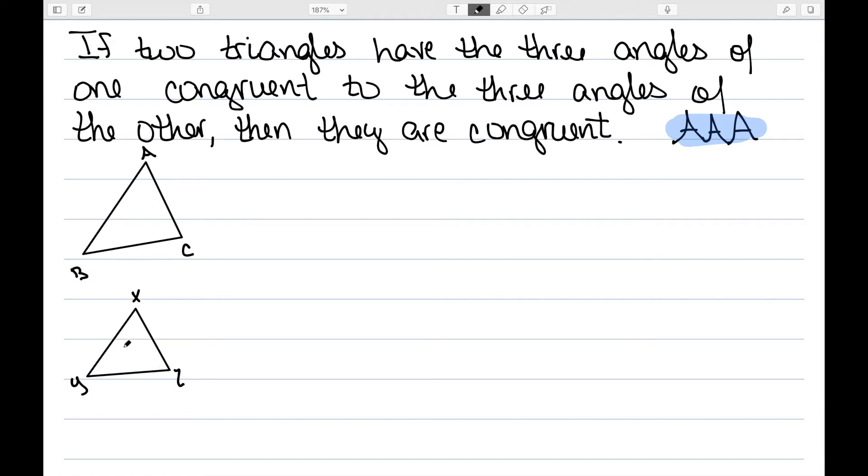If any one of my sides are congruent to one of the sides down here, so for instance if AB is congruent to XY, then I'll be done since I'll have angle side angle. So I need to assume that none of the sides are congruent.